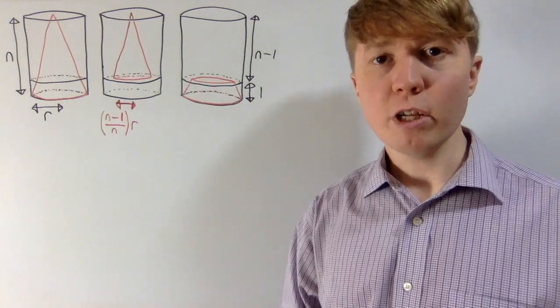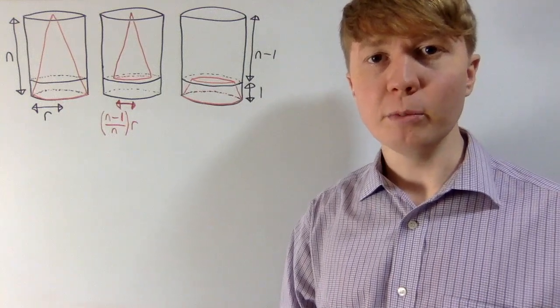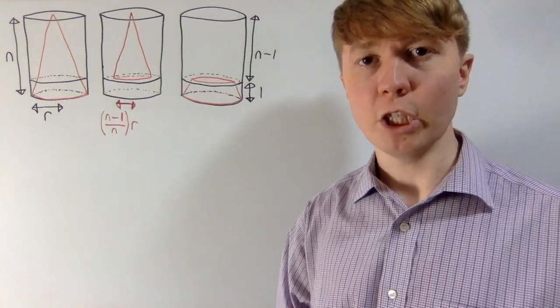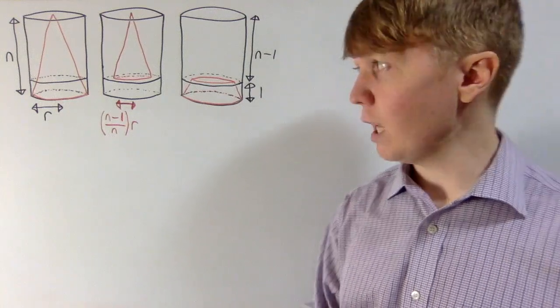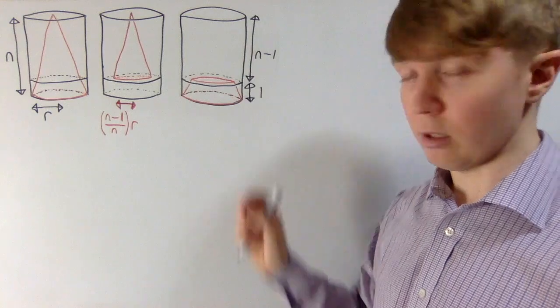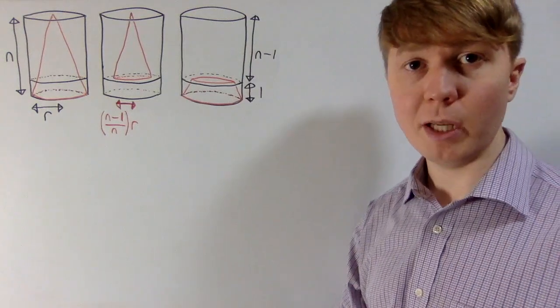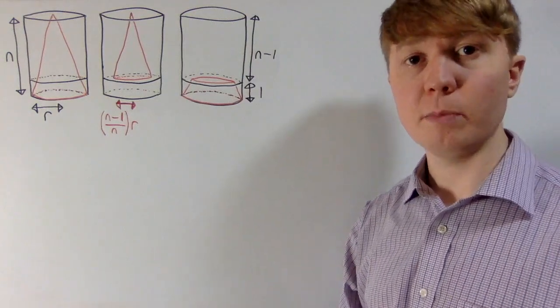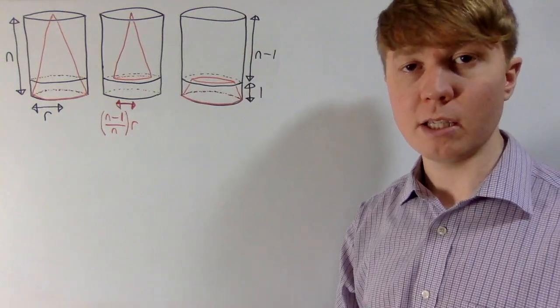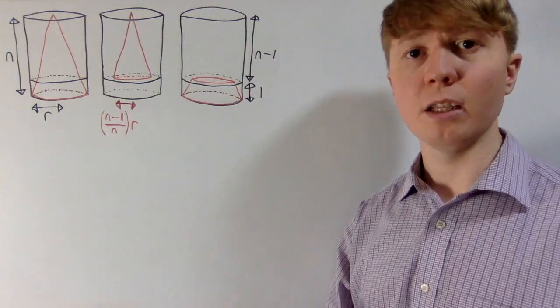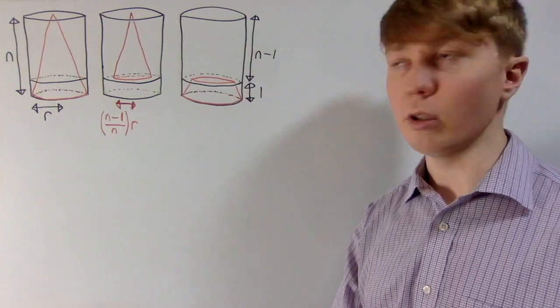We're going to have a look at a really interesting proof for the formula for the volume of a cone. So this relies on the following setup. I'll explain the setup, then I'll explain how we're going to turn this into a proof, and then we'll actually do the proof.